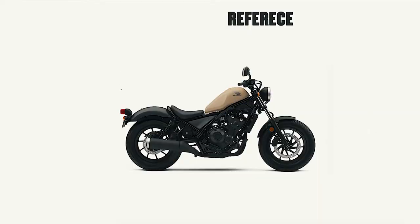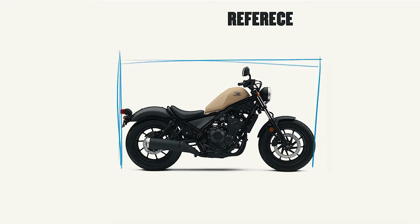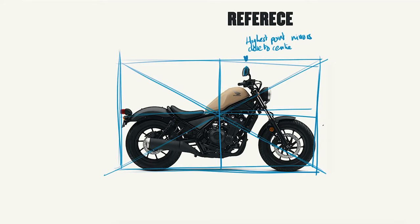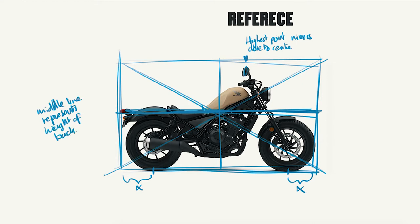Step number two: let's start by drawing a box around the motorcycle and a line through the middle, so we can measure what's happening on the left and right side. The highest point — the mirrors — is close to center but slightly toward the middle. The wheels are approximately the same distance from each end, and the middle line represents almost the height of the back section.